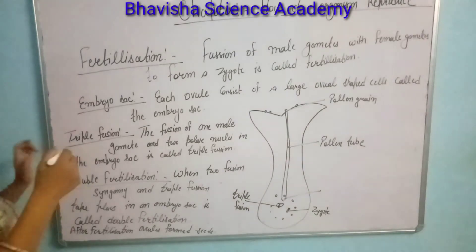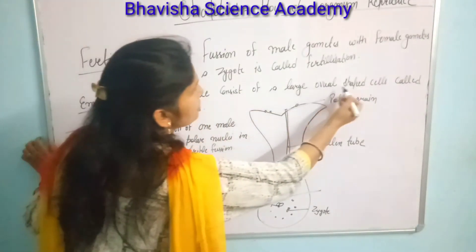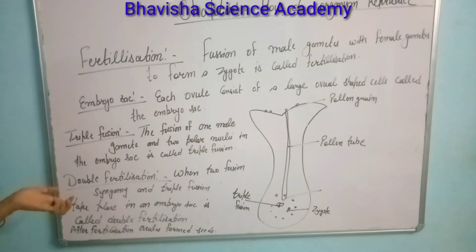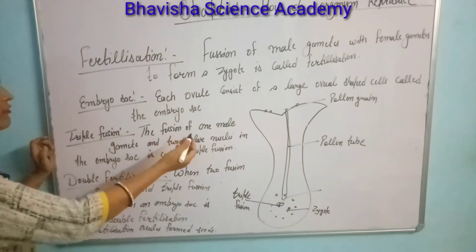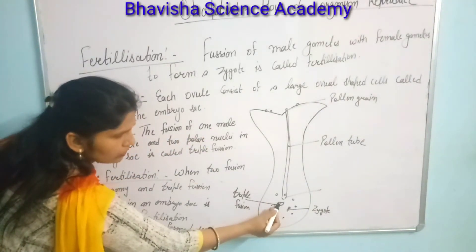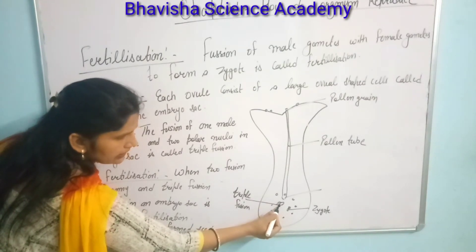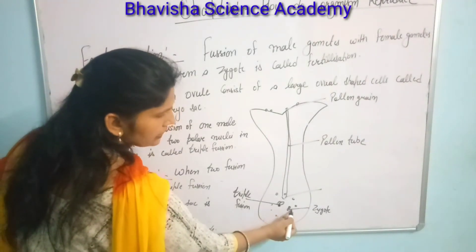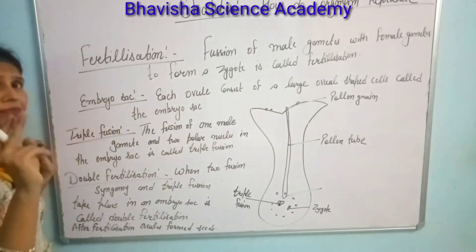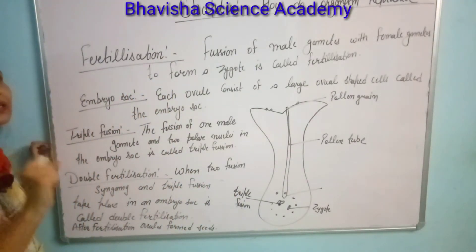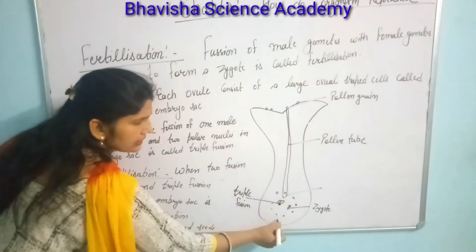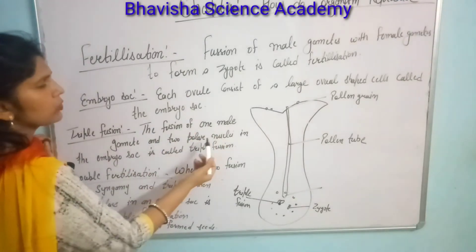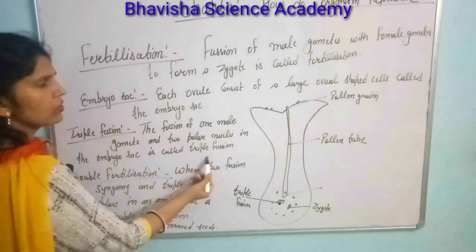When the zygote forms inside our ovary, it is enclosed in a bag-like structure known as the embryo sac. Each ovule consists of a large ovule-shaped cell called the embryo sac. Triple fusion also takes place in the embryo sac.